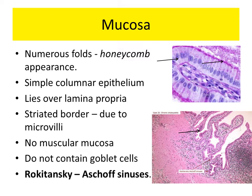There are a lot of microvilli which give a striated appearance to the epithelium. Also, there is no muscularis mucosa and no goblet cells. The mucosal folds extend deep into the muscularis externa, forming what are called Rokitansky-Aschoff sinuses, which are probably involved in infection and stone formation.